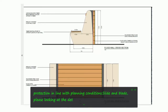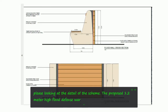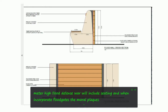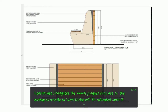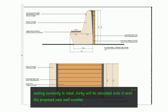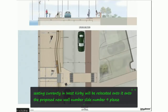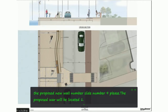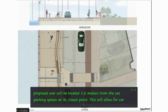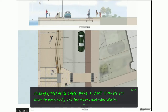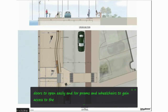Looking at the detail of the scheme, the proposed 1.2 metre high flood defence wall will include seating and will incorporate floodgates. The memorial plaques that are on the seating currently in West Kirby will be relocated onto the proposed new wall. The proposed wall will be located 1.2 metres from the car parking spaces at its closest point. This will allow for car doors to open easily and for prams and wheelchairs to gain access to the promenade.